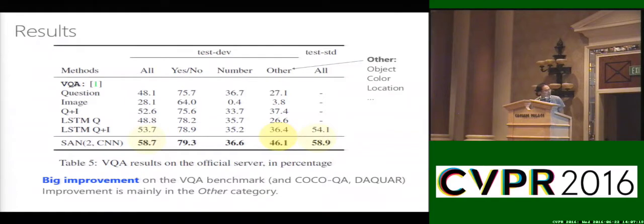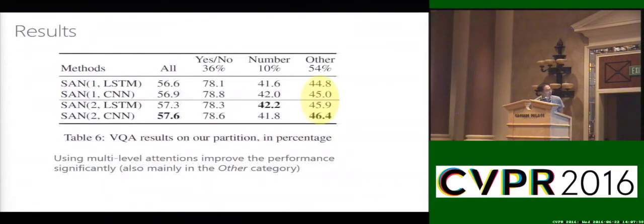For example, for the number and yes-no categories we improved just a little bit, and this is actually also a trend if you look at other results from other previous models. Including fine-grained image features improved a lot for the 'other' category and had just slight impact on other categories. We also investigated what's the impact of having multiple layers of attention models. In this case we have four kinds of settings, including using one or two levels of attention models and also whether we use LSTM or use convolution network to encode the question. We found LSTM and CNN-based encoding of the question give similar results compared to each other, and if you compare the second level attention network to the first level attention network, there are quite observable improvements, like more than one percentage point improvement.